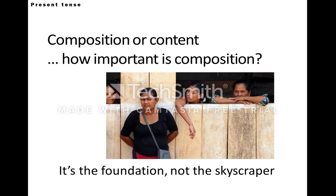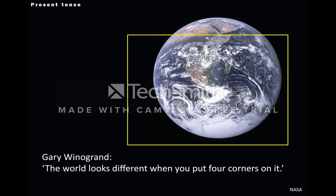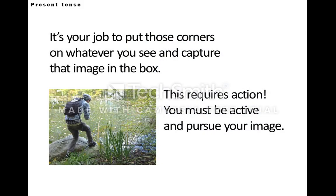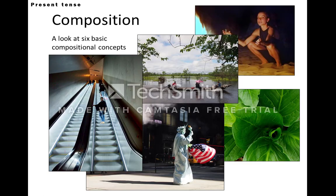Good composition is not an end-all and be-all. It's much like good spelling and good grammar are for reporters. Composition can be crucial to getting your point across, but it is not the point. The point is the content. The great street shooter Gary Winogrand said, 'The world looks different when you put four corners on it,' and it's a big world to fit in a small frame. That's what you're doing with your camera — fitting a scene into a rectangle. To do this, you can't be passive. You have to move. You have to be a visual explorer and a hunter.